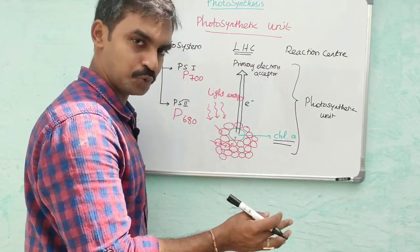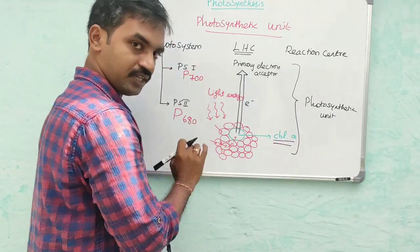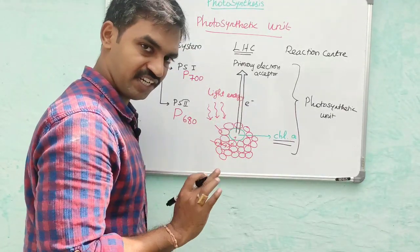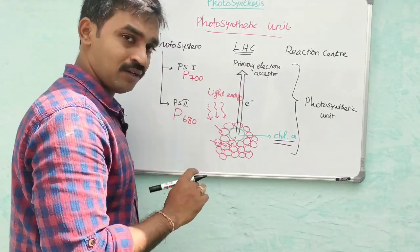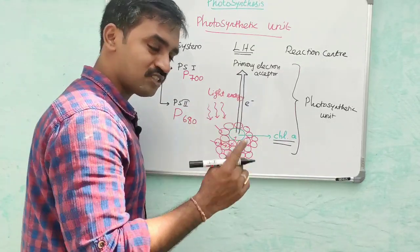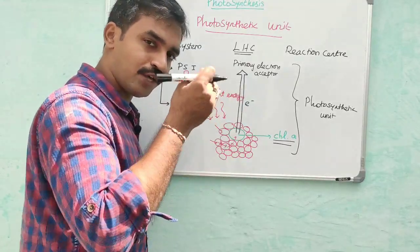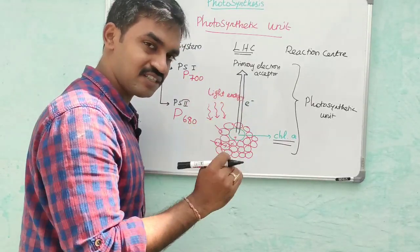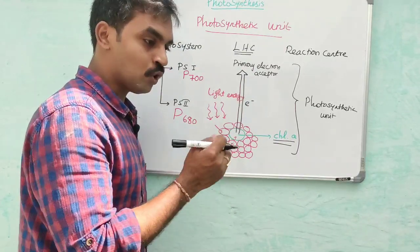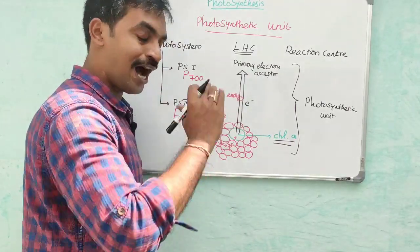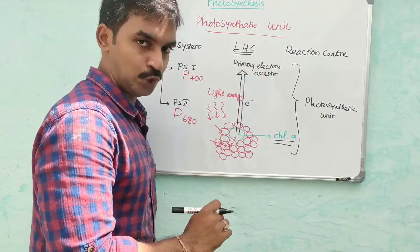Both PS1 and PS2 have a similar structure with chlorophyll a, but PS1 has more chlorophyll a than PS2. PS1 is located on the outer surface of the thylakoid membrane, while PS2 is located in the inner part or center near the lumen. This is the photosynthetic unit.